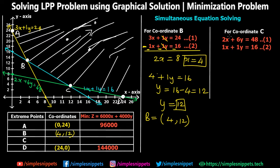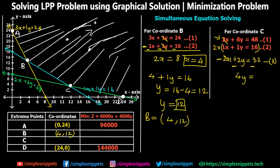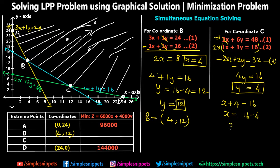For point C, we multiply equation 2 (x + y = 16) by 2 to get equation 3: 2x + 2y = 32. Subtracting this from 2x + 6y = 48 gives 4y = 16, so y = 4. Substituting y = 4 into x + y = 16 gives x = 12. So coordinate C is (12, 4). We now have all four extreme points: A(0,24), B(4,12), C(12,4), D(24,0).